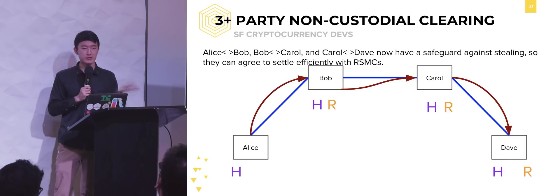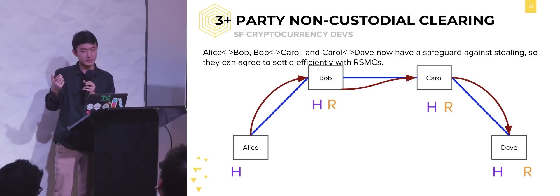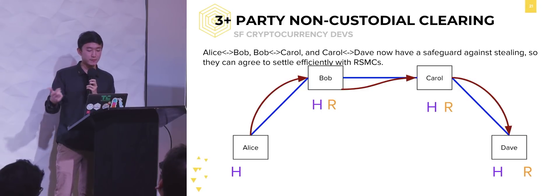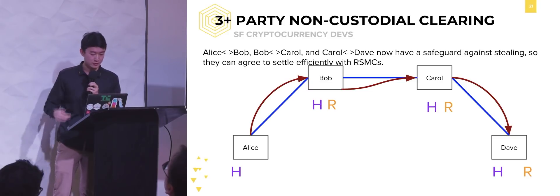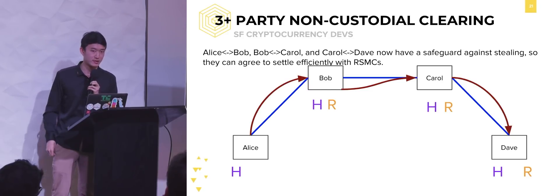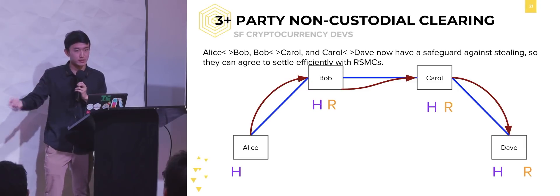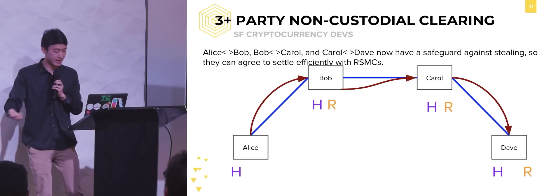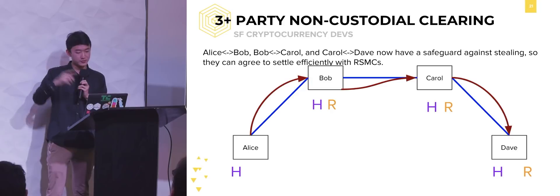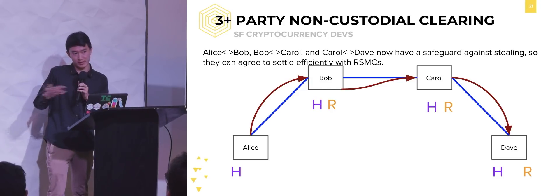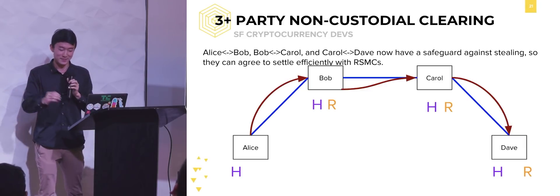We don't actually want to publish these on-chain transactions because they're expensive. So instead we settle these off-chain between every one of these relationships. Alice and Bob say, 'let's terminate the off-chain transaction we just made and just make a standard channel payment.' Bob and Carol do the same, and Carol and Dave do the same. This way, Alice is able to pay Dave without having to trust Bob or Carol. Through this mechanism, you can pay whoever you want that is connected in this Lightning Network. You can imagine a graph where all the nodes are people running Lightning software and all the edges are channels open between people — any node you can find a path to, you can pay.